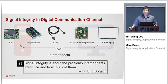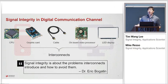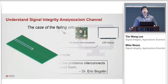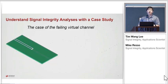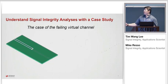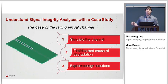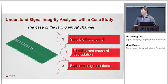Signal integrity is about the problems interconnects introduce and how to avoid them. First we'll have to understand signal integrity with a case study — a failing virtual channel. I'll talk about the three steps to solving any signal integrity problem: number one, simulate the channel; number two, find the root cause; and number three, explore design solutions.